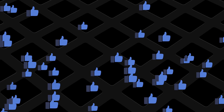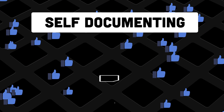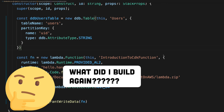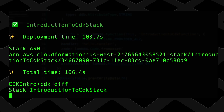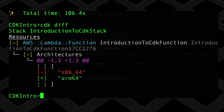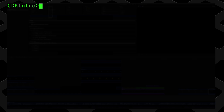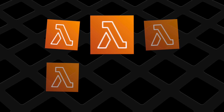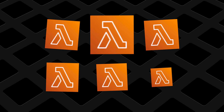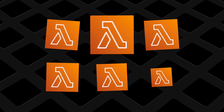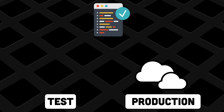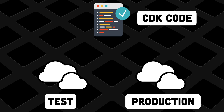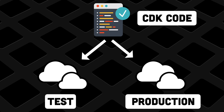There are a ton of advantages to this approach. It's self-documenting — if anyone needs to know what resources are in a system, they can simply look at the CDK code. It allows infrastructure changes to be code-reviewed and version-controlled just like your application logic. It also allows you to set up multiple instances of a given resource with slight variations, such as setting up the same resources in two different AWS accounts — one for testing and another for production.